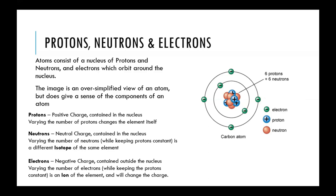These different numbers of neutrons in elements are called isotopes, and these will be touched on a little bit later. The last component of an atom is the electrons, which are found outside of the nucleus where the protons and neutrons are condensed in the center. The electrons are surrounding that nucleus, and electrons themselves are negatively charged.